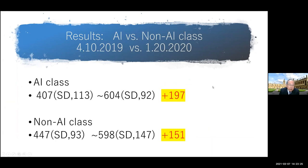Another experiment I carried out was AI speaker versus non-AI classes. For 10 months, one class of about 30 students used the AI speaker; the non-AI class, instead of using the AI speaker, was highly engaged in e-learning — but the other pedagogy was exactly the same. If you look at the scores, the AI class improved about 197 points pre-to-post, and the non-AI class improved only 151 points. So the AI class seemed to perform better than the non-AI class.